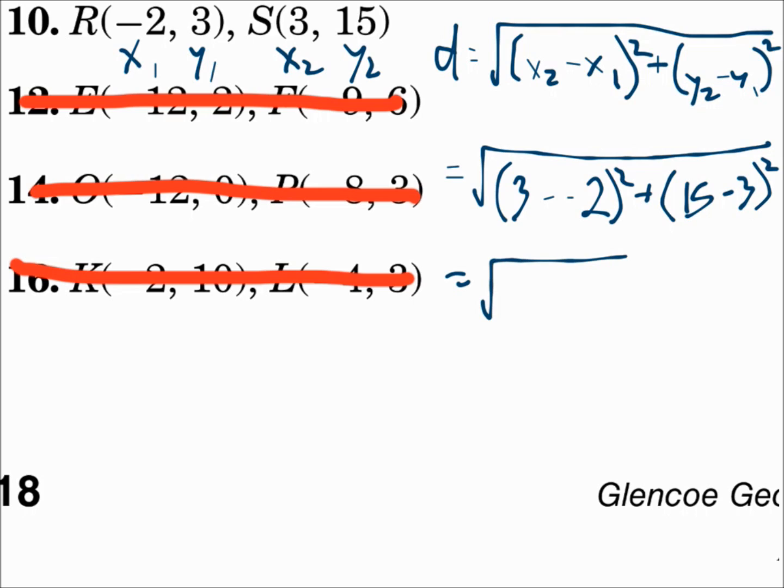3 minus negative 2 is 5, squared is 25. 15 minus 3 is 12, squared is 144. That's the square root of 169, which is 13. Substitute your numbers in and work it out.